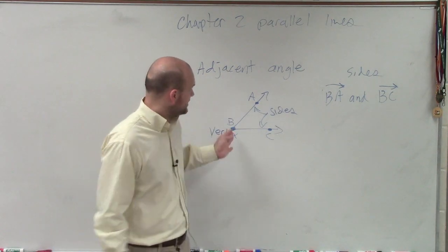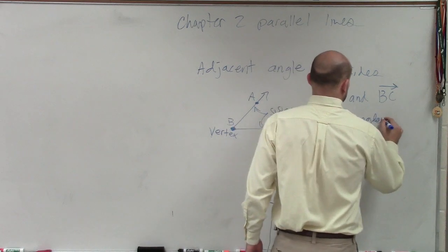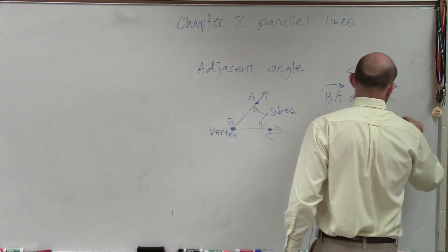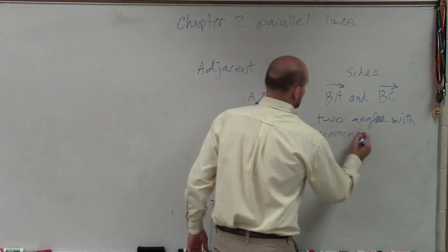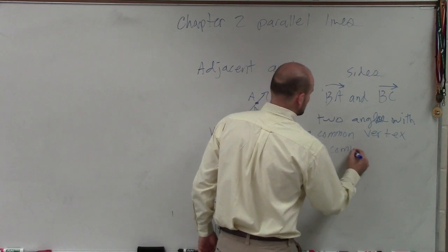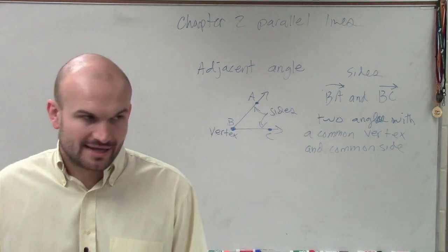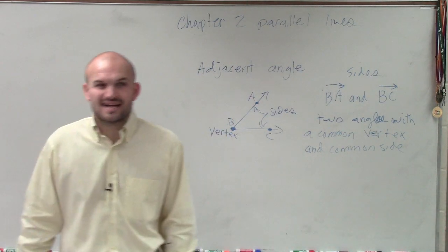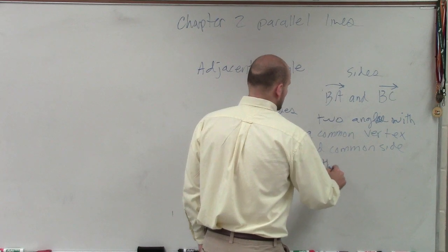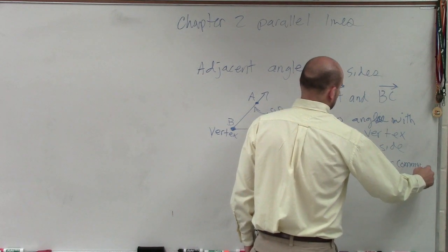So remember, the sides and the vertex. When we're talking about adjacent angles, our adjacent angles are when we have two angles with a common vertex and common side. That's what adjacent angles are, exactly. They have to have a common vertex, a common side, and also no interior common points.